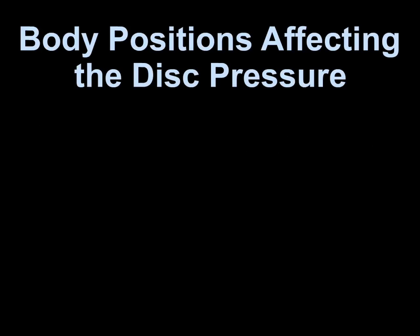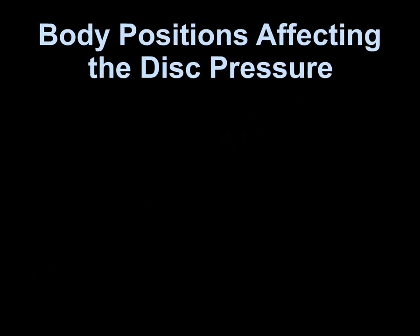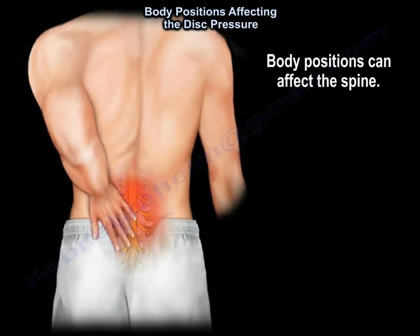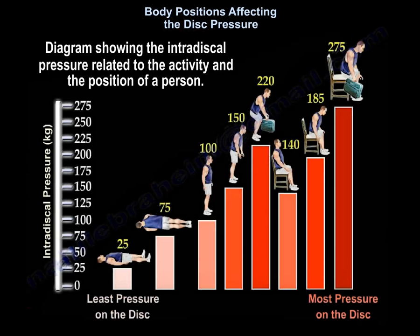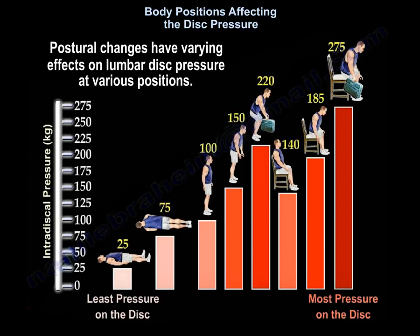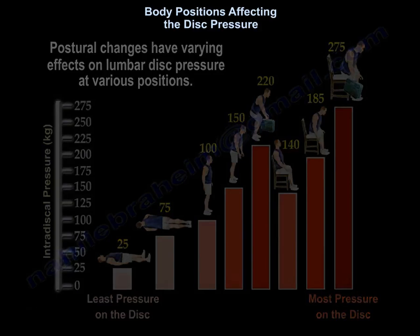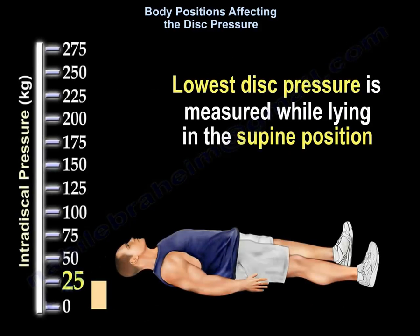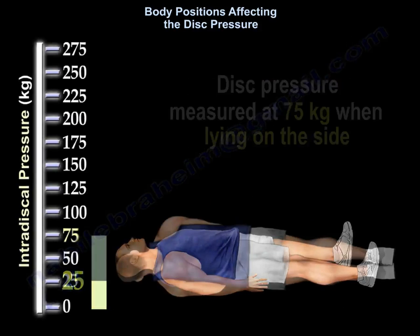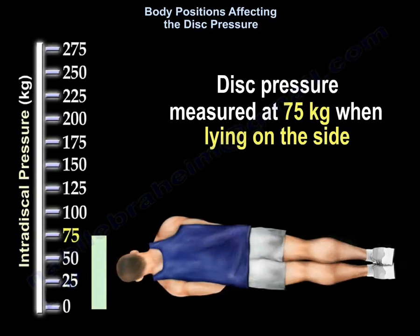Body positions can affect the spine. Here is a diagram showing the intradiscal pressure related to the activity and position of a person. Postural changes have varying effects on lumbar disc pressure at various positions. The lowest disc pressure is measured while lying in the supine position, with disc pressure measured at 75.